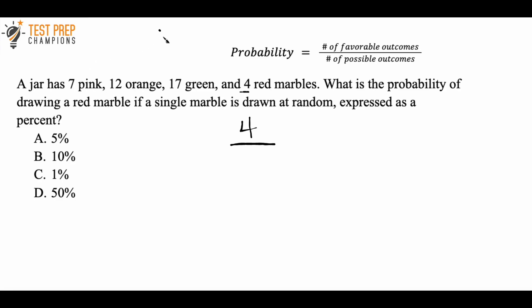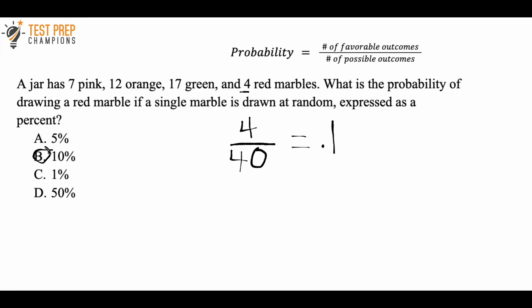12, 17, and 4. So 7 plus 12 plus 17 plus 4 gives me 40. So to get the right answer here, I have to do 4 divided by 40. In my calculator, that gives me 0.1. And 0.1 expressed as a percent is equal to B.